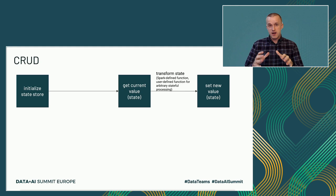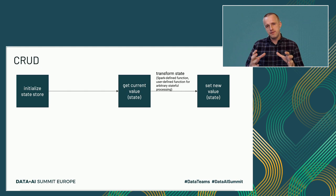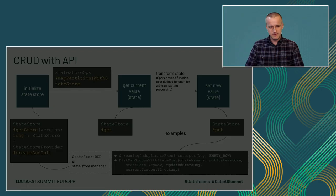Starting with the basic CRUD operations — reading, creating, and manipulating state — it's very straightforward. We always start by initializing the state store, then retrieve the state for every input record, combine that input record with the retrieved state, and later write a new version of the state.